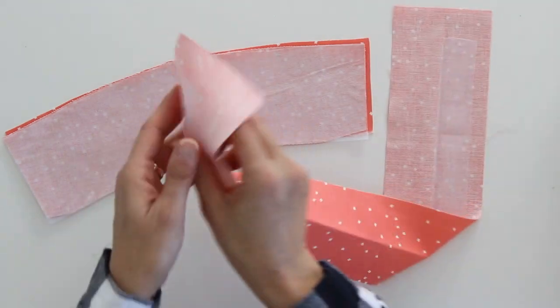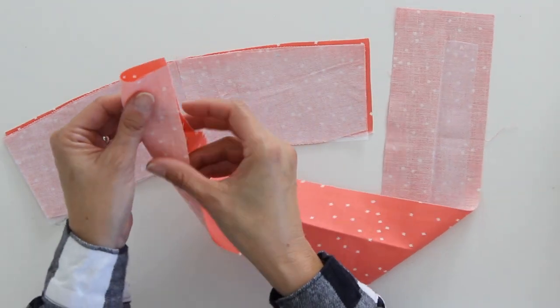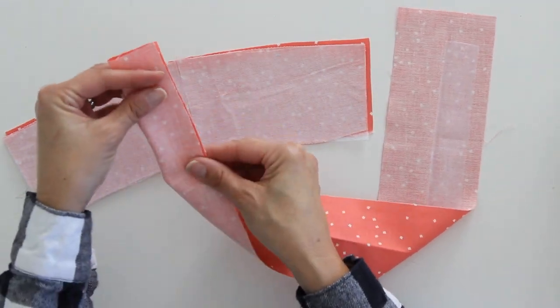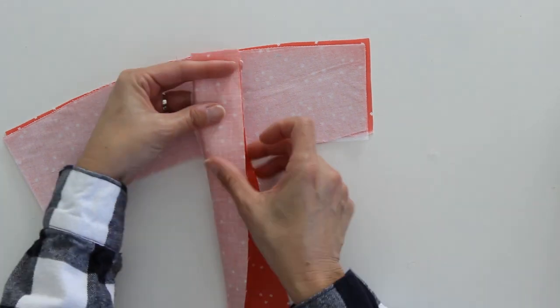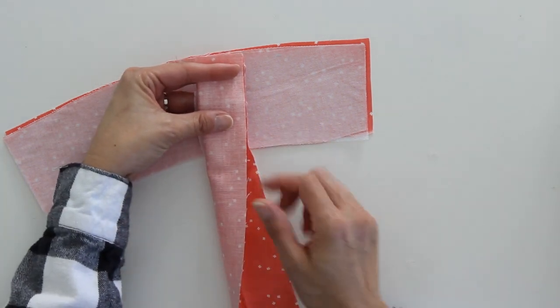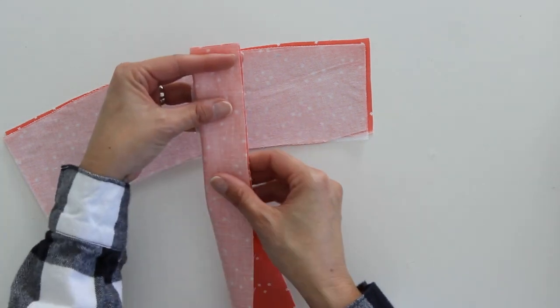And the strap is actually what we're going to sew first. I am going to fold it in half right sides together matching those long edges and sew it with a half inch seam allowance on the sewing machine.